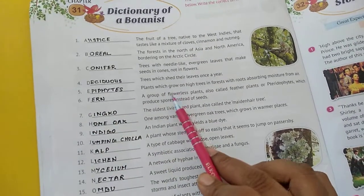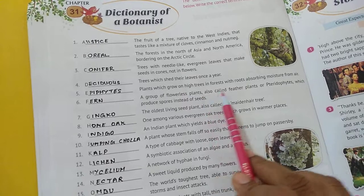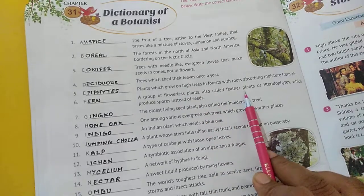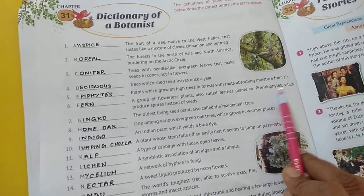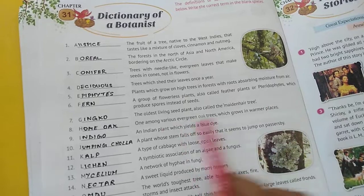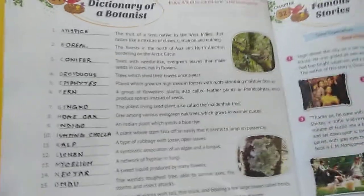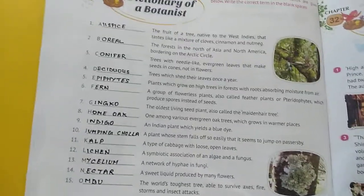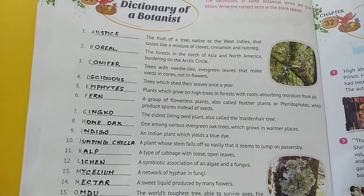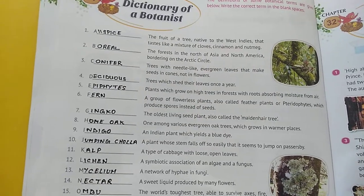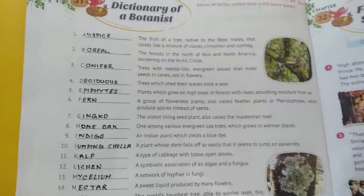Number six: a group of flowerless plants, also called feather plants or pteridophytes, which produce spores instead of seeds — spores produce karte hai, na ki seeds. They are called fern.